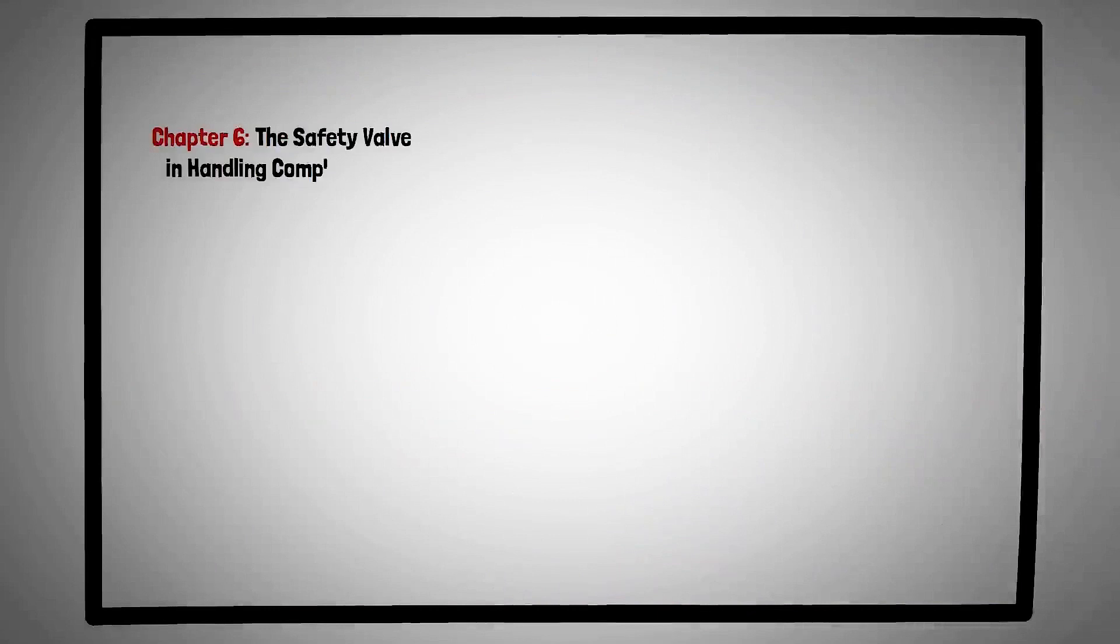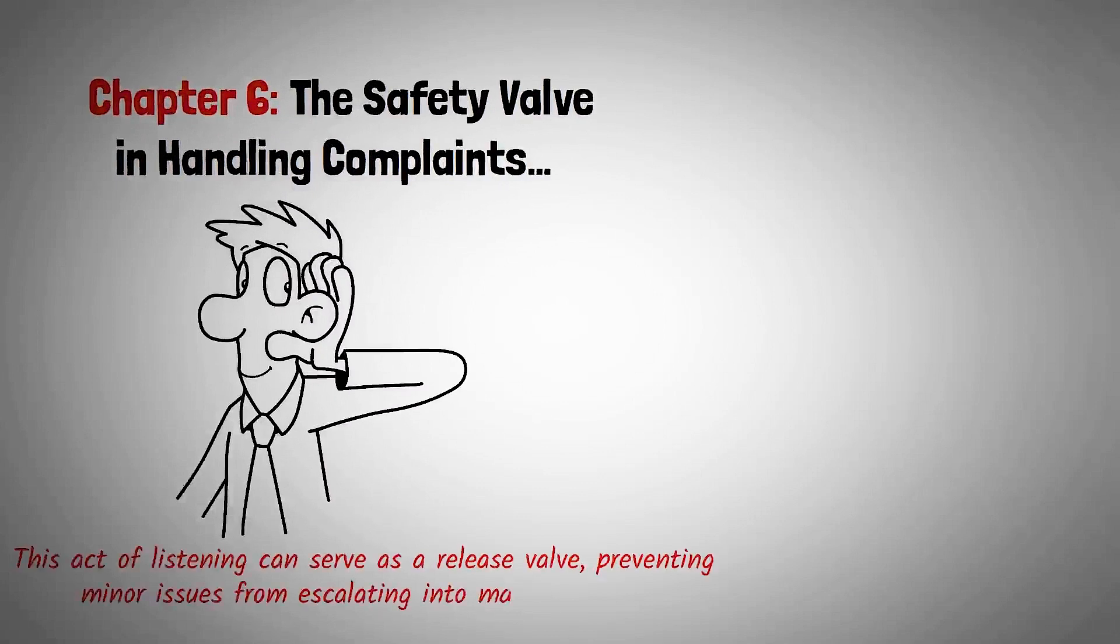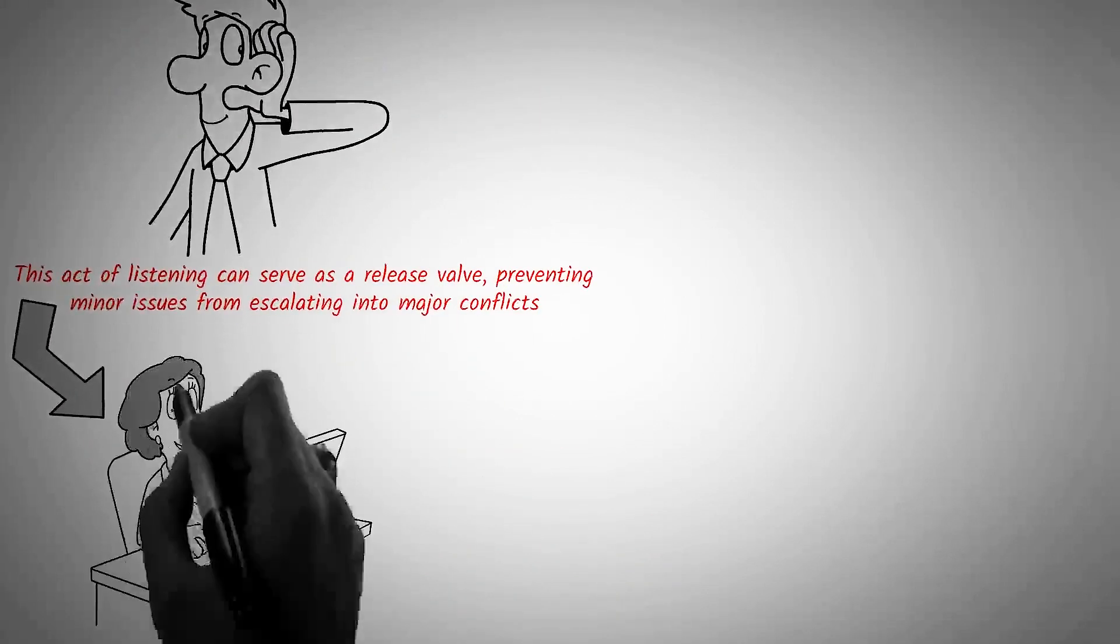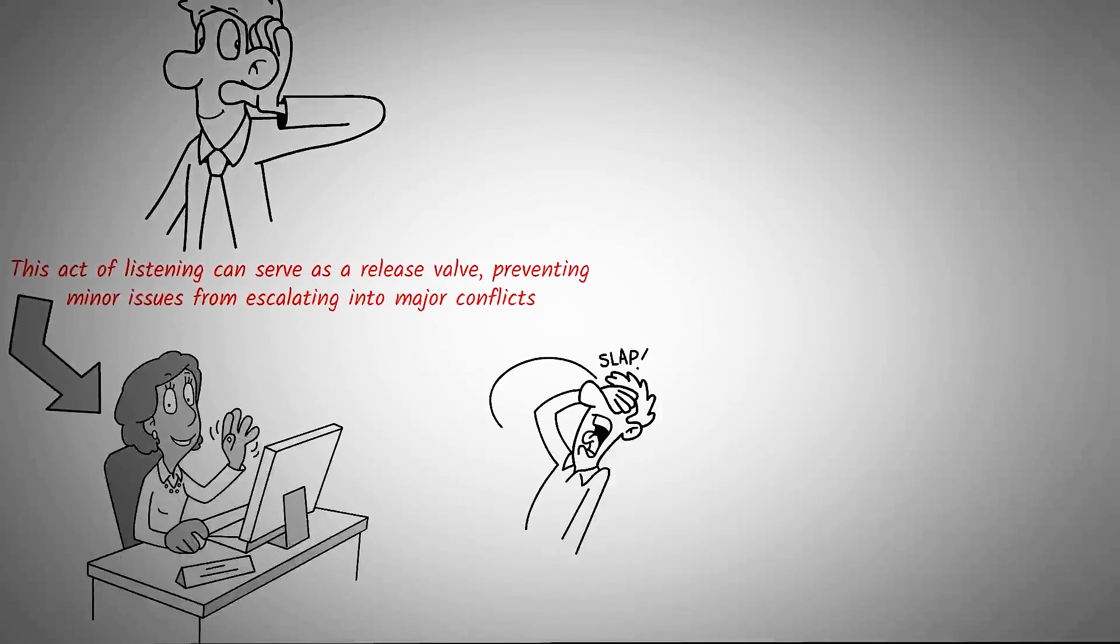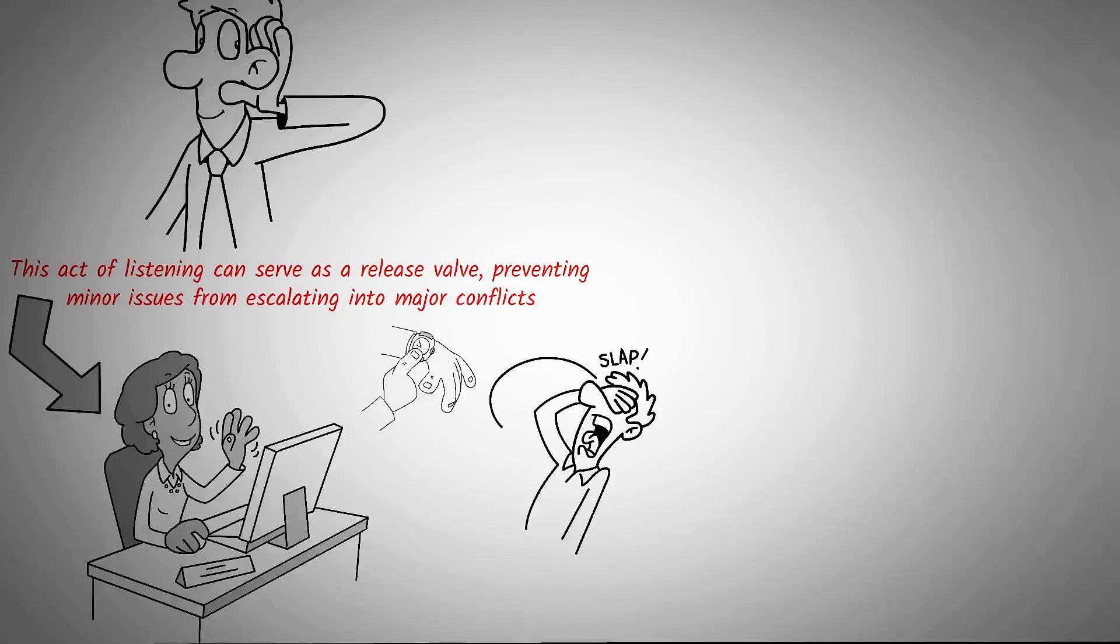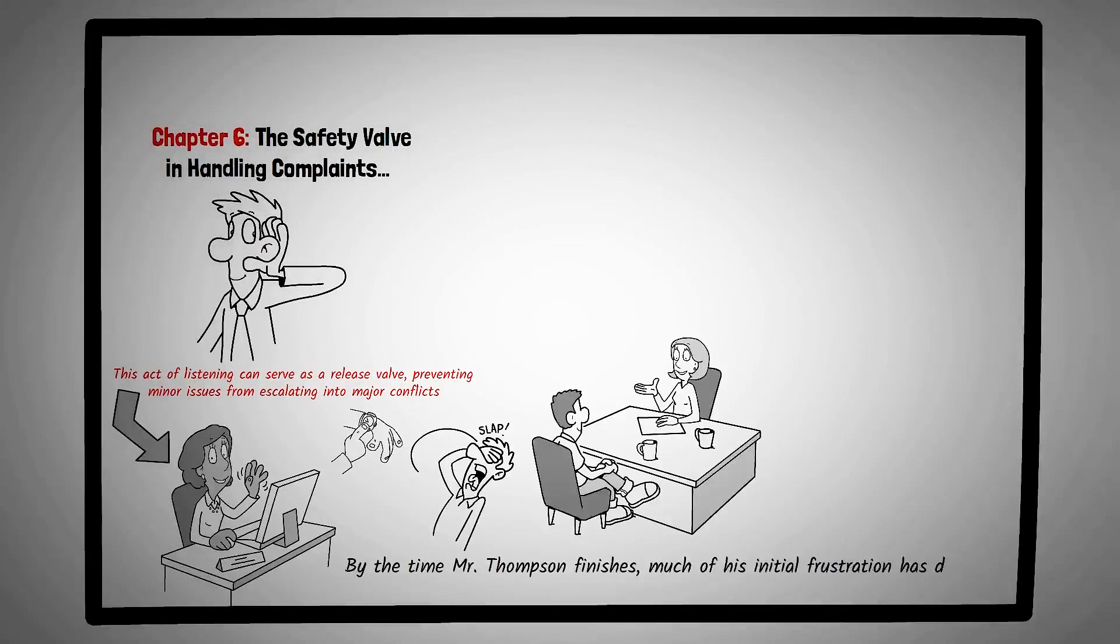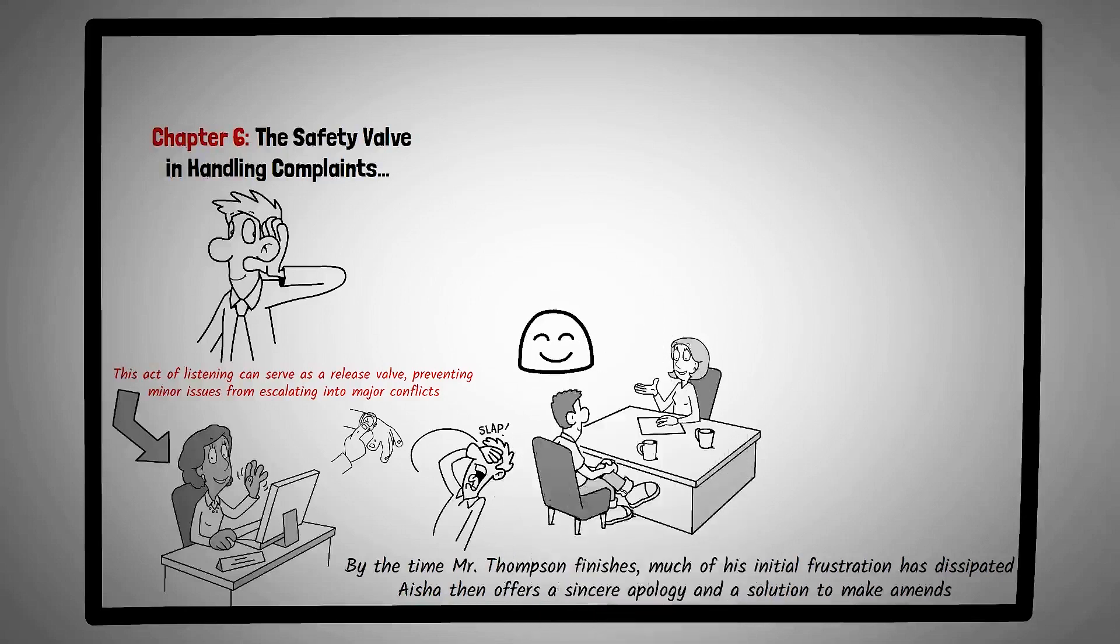Chapter six, the safety valve in handling complaints. In the realm of conflict resolution, one of the most effective tools is often the simplest: active listening. This chapter delves into the importance of allowing others to voice their concerns and frustrations, highlighting how this active listening can serve as a release valve, preventing minor issues from escalating into major conflicts. Consider the story of Aisha, a manager at a bustling restaurant. One evening, a visibly upset customer, Mr. Thompson, approaches her, complaining about the long wait time and a mix-up with his order. Instead of immediately offering a solution or defending her staff, Aisha invites Mr. Thompson to sit and share his experience in detail. As he talks, she listens intently, occasionally nodding or asking clarifying questions. By the time Mr. Thompson finishes, much of his initial frustration has dissipated. Aisha then offers a sincere apology and a solution to make amends. Mr. Thompson, feeling heard and valued, not only accepts her offer but also leaves with a positive impression, turning a potential negative review into a commendation for excellent customer service.